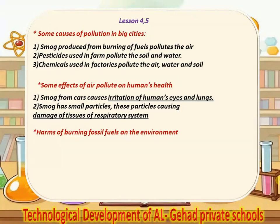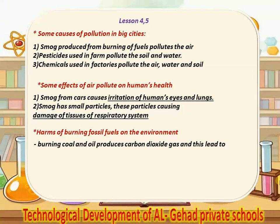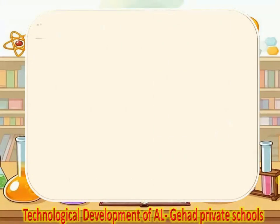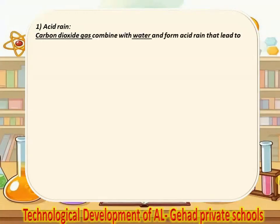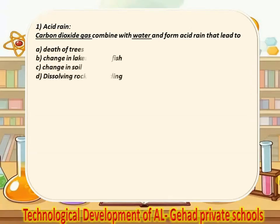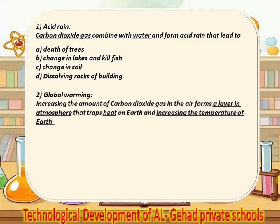Harms of burning fossil fuels on the environment. Number 1, burning coal and oil produces carbon dioxide gas, and this leads to carbon dioxide gas combining with water to form acid rain. That leads to death of trees, changes in lakes and killing of fish, change in soil, and dissolving rocks of buildings. Number 2, global warming: increasing the amount of carbon dioxide gas in the air forms a layer in the atmosphere that traps heat on earth, increasing the temperature of the earth.